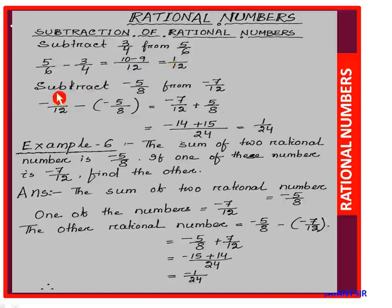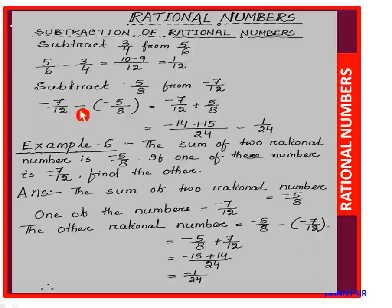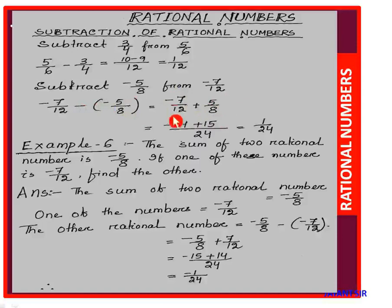Another example: subtract -5/8 from -7/12. 'From -7/12' means we write -7/12 first. Subtract means minus, so minus (-5/8). Minus into minus gives plus 5/8. Now find LCM of 12 and 8, which is 24.